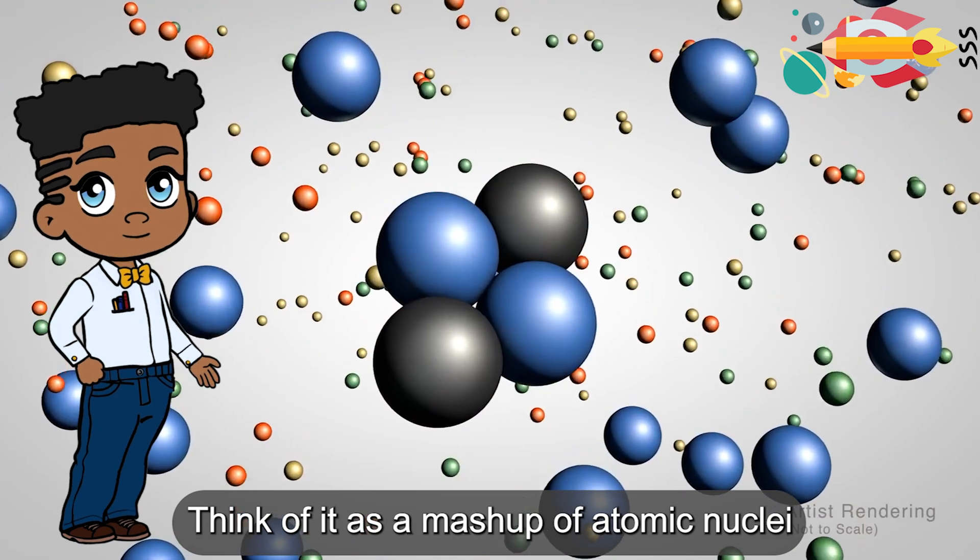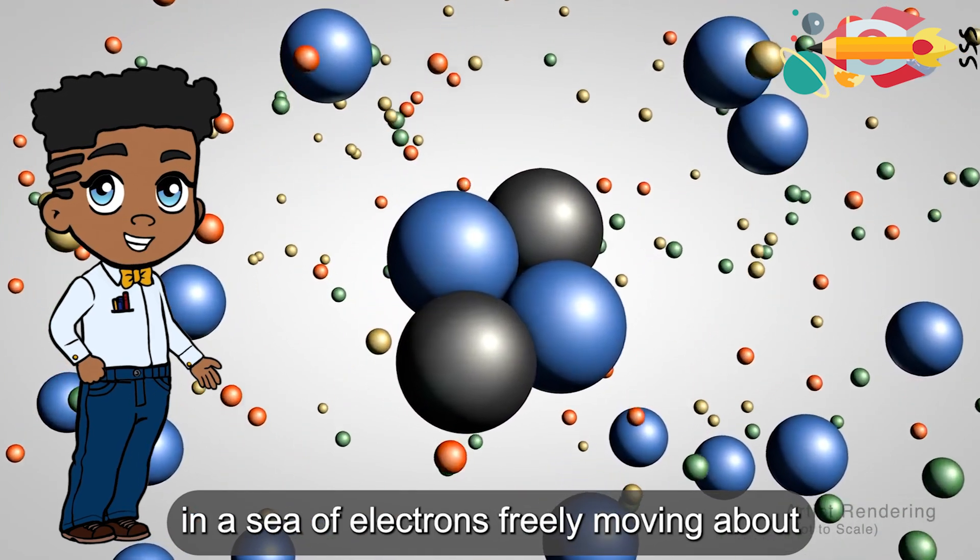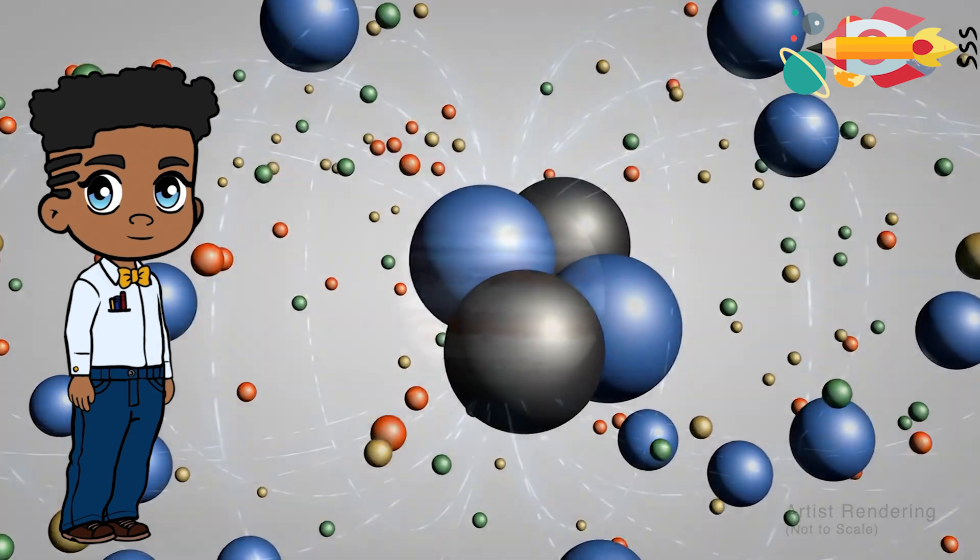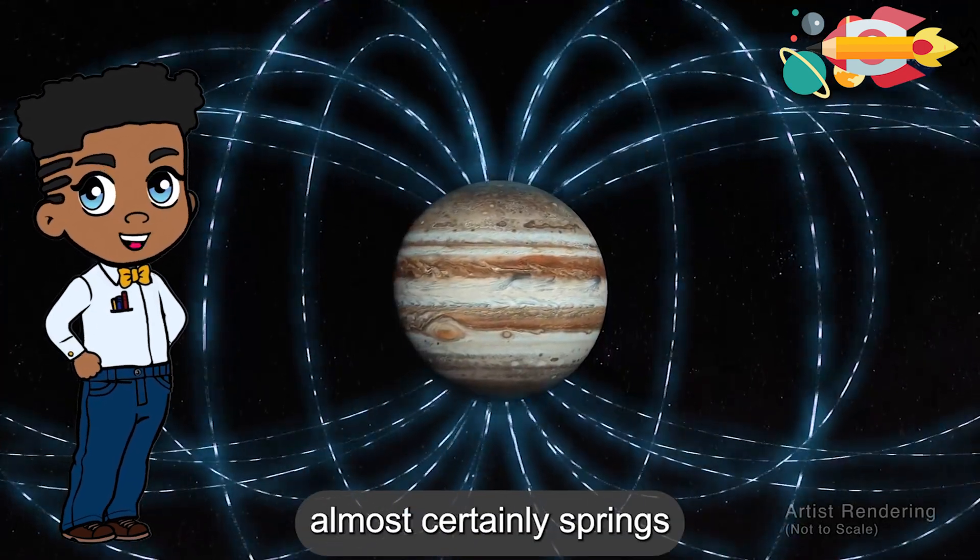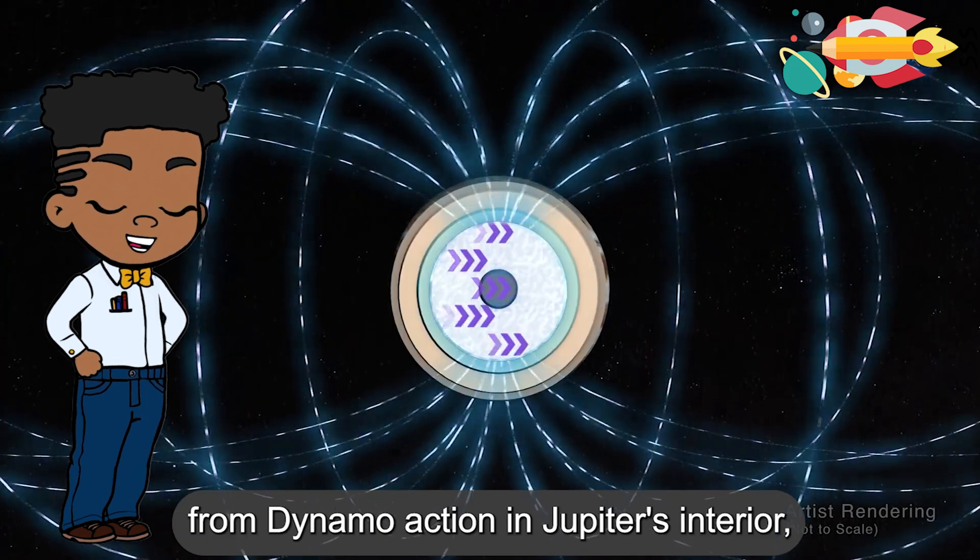Think of it as a mashup of atomic nuclei in a sea of electrons freely moving about. Jupiter's powerful magnetic field almost certainly springs from dynamo action in Jupiter's interior,